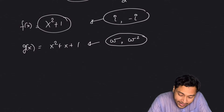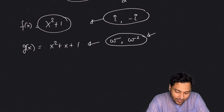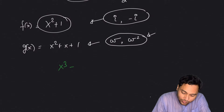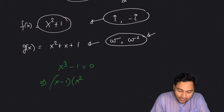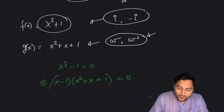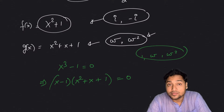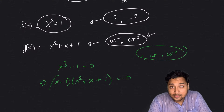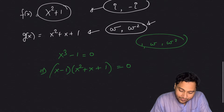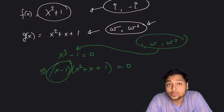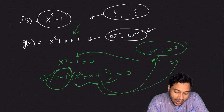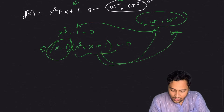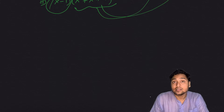If you don't know why omega and omega² are the roots, recall that x³ − 1 = 0 is factorable as (x − 1)(x² + x + 1) = 0. We are looking at the cube roots of unity: 1, omega, and omega². We are not using x = 1 as a root here — that's not a root of x² + x + 1 — but that factor gives two roots: omega and omega². So we have i and −i from the first polynomial, and omega and omega² from the second.